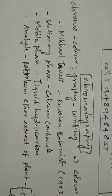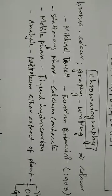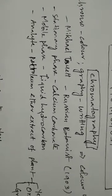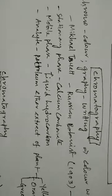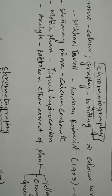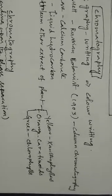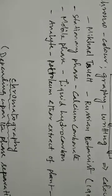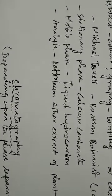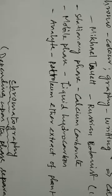This is a small history of chromatography. A Russian botanist separated a plant's color extract. This is column chromatography. The stationary phase is calcium carbonate, the mobile phase is liquid hydrocarbon, and the plant extracts show color separation using petroleum ether.